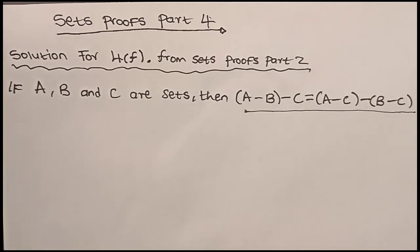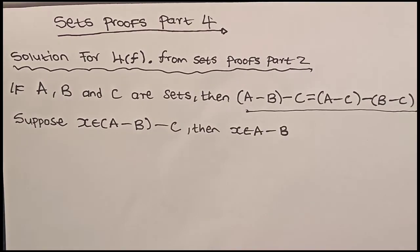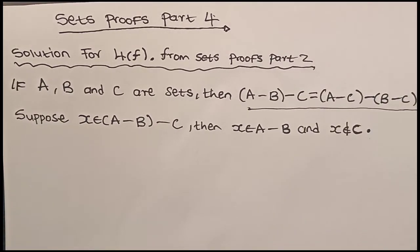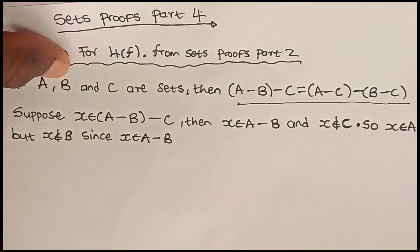Our proof goes this way. Suppose x is in A-(B-C), then x is in A-B and x is not in C. So x is in A but not in B, since we know that x is in the difference A-B.